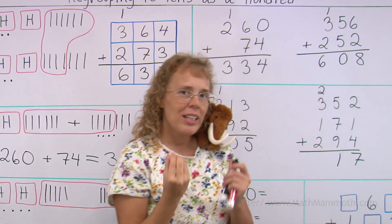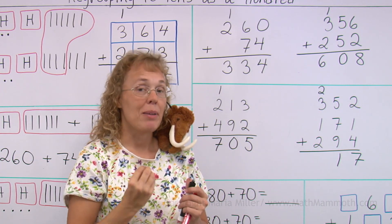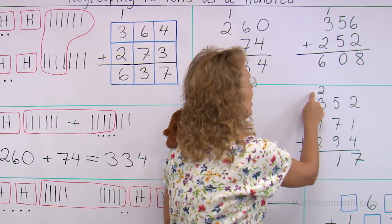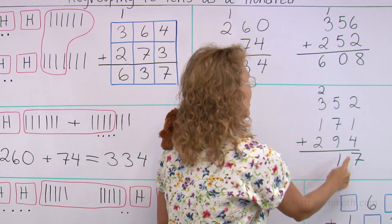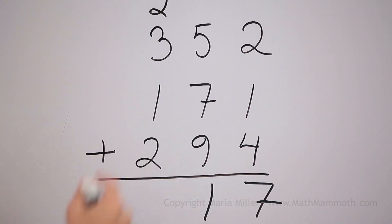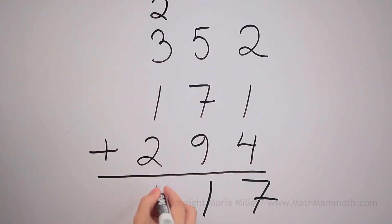Because of the twenty-one tens, twenty tens makes two hundreds. So the two hundreds get written with the other hundreds, and one ten here. And then we have here five, six, eight. Eight hundred.